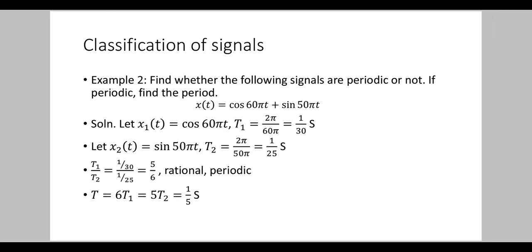Example 2: Find whether the following signals are periodic or not. If periodic, find the period. x(t) = cos(60πt) + sin(50πt). Let x1(t) = cos(60πt). Time period T1 = 2π/60π = 1/30 second. Similarly, x2(t) = sin(50πt). Time period T2 = 2π/50π = 1/25 second.